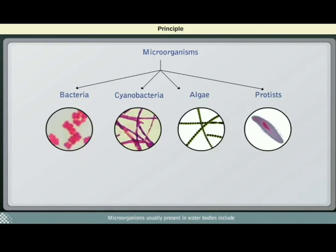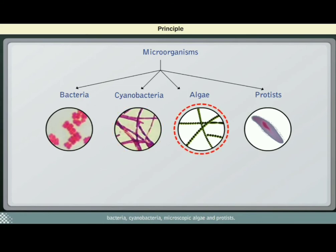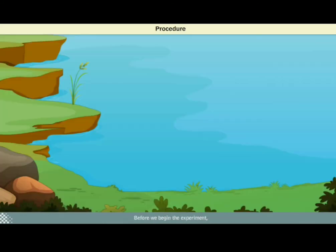Micro-organisms usually present in water bodies include bacteria, cyanobacteria, microscopic algae, and protists. Before we begin the experiment, we must collect water samples from various water bodies and sources.